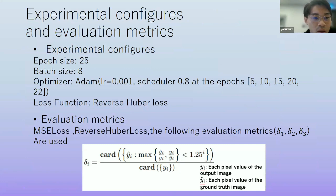Next, experimental configures and evaluation metrics. Epochs is 25, batch size is 8. Optimizer we adopt Adam, initial learning rate is 0.001. And we also use scheduler, 0.8 times at the epochs 5, 10, 15, 20, 22. We adopt a reverse Huber loss as a loss function. And this function is embedded in some famous previous research. So we assume it effective for our research. So we adopted.